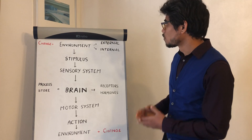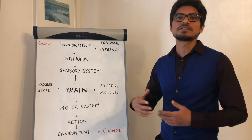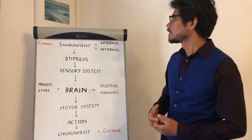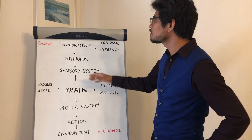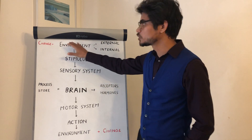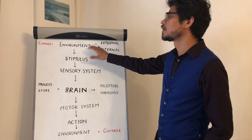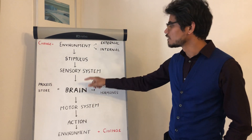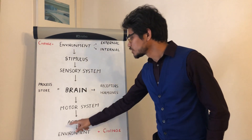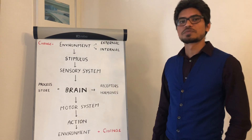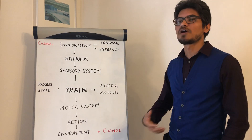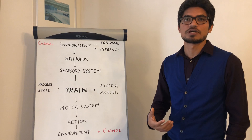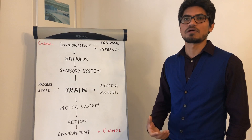The brain is a part of the nervous system and its main purpose is to sense any change in our environment, process this information, and take an appropriate action through the motor system, so that finally there is a change which is suitable for your body.